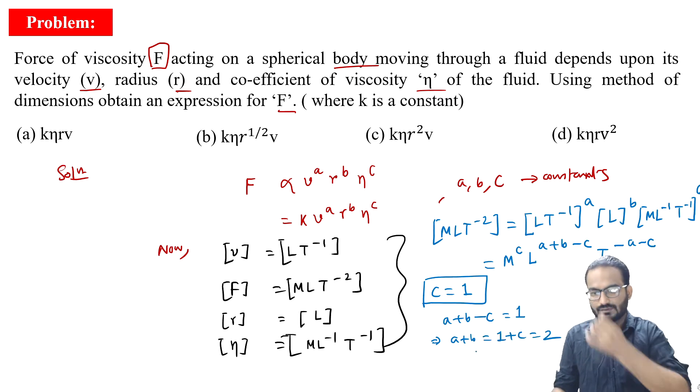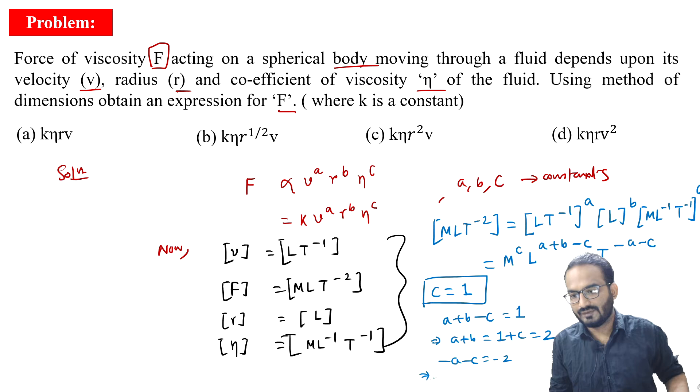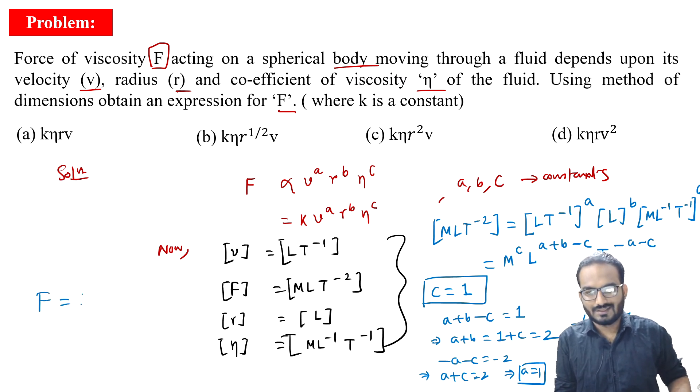Further, -A-C equals -2, means A+C equals 2. Since C equals 1, A equals 1. If A equals 1, then B equals 2 minus A, so B also equals 1. So our relation becomes F equals a constant K times V times R times eta, because A, B, C all of them are 1. So option D is the correct option for this question.